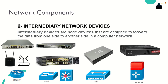A router uses its routing table to determine the best paths to forward a packet to its destination. A network switch is equipment that allows two or more IT devices, such as computers, to communicate with one another at Layer 2. A firewall is a network security device that monitors incoming and outgoing network traffic and permits or blocks data packets based on a set of security rules, functioning like a checkpoint in our network.